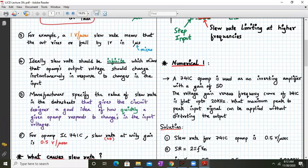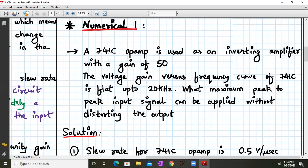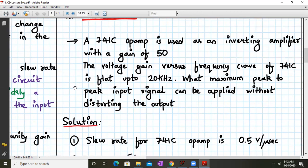Okay. So let's go to our numerical number one. So let me just focus on this. Okay. So numerical number one says that we have an op-amp which is used as an inverting amplifier with a gain of 50. Next the voltage gain versus frequency curve of 741 is flat up to 20 kilohertz. They are giving us the frequency. Now the question is what maximum peak to peak input signal can be applied without distorting the output.